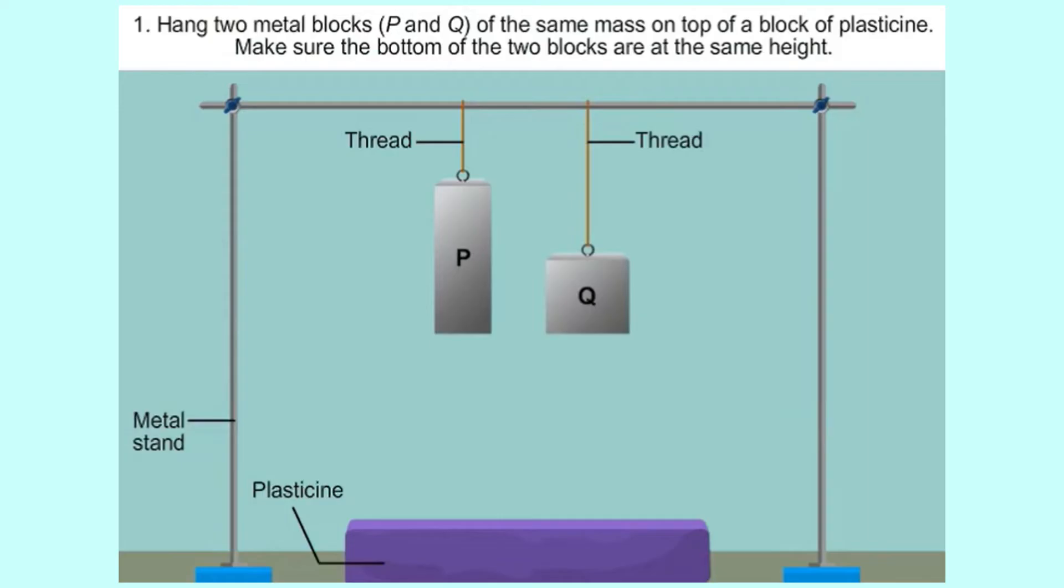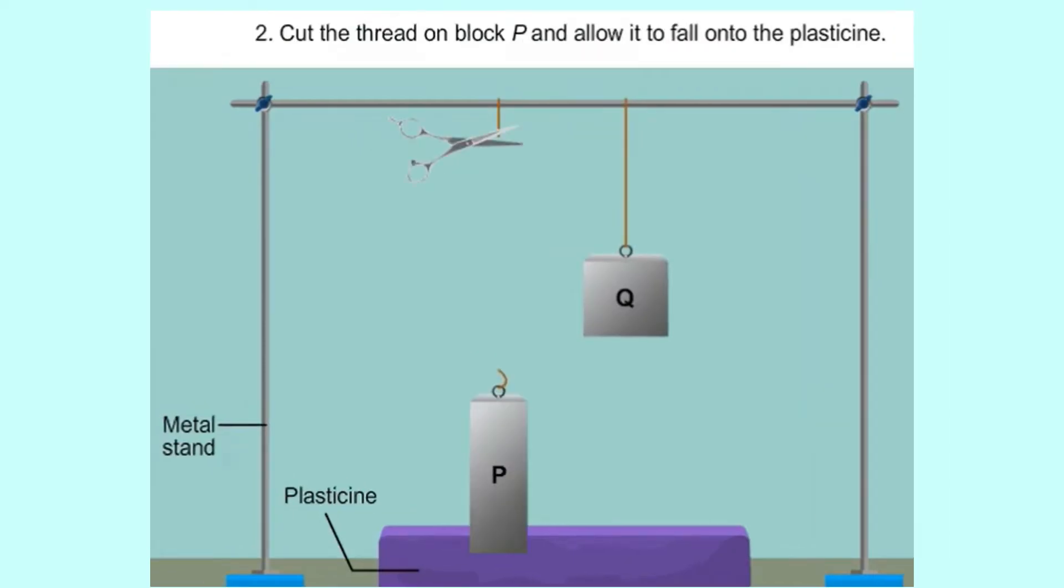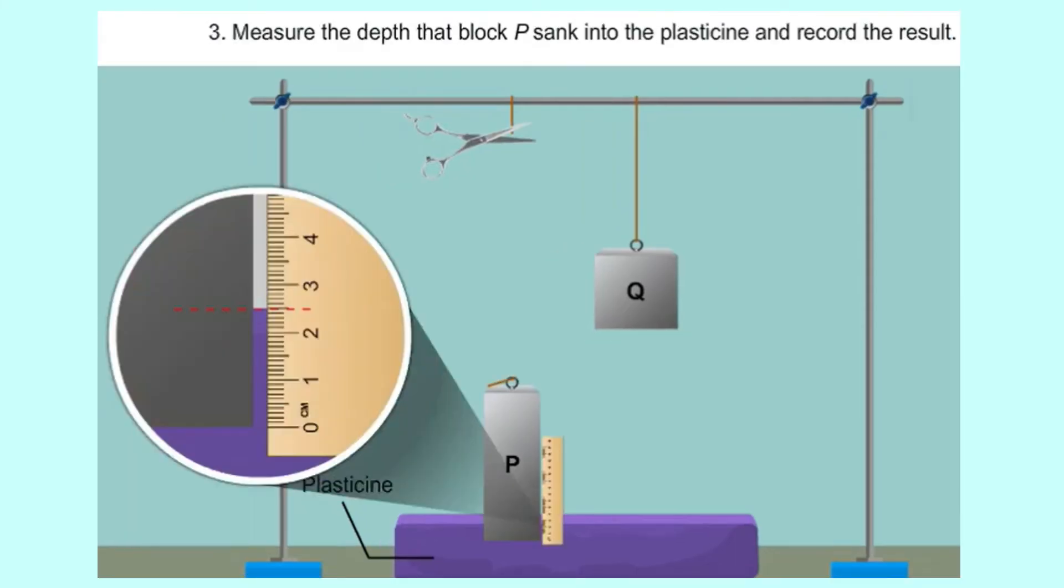First, two metal blocks with the same mass are hung on top of a block of plasticine. A piece of plasticine is placed under the two metal blocks. You have to make sure that the bottom of the blocks are at the same height. And then, metal block P is released. The depth of the dent on the plasticine is measured with a ruler and record the result.